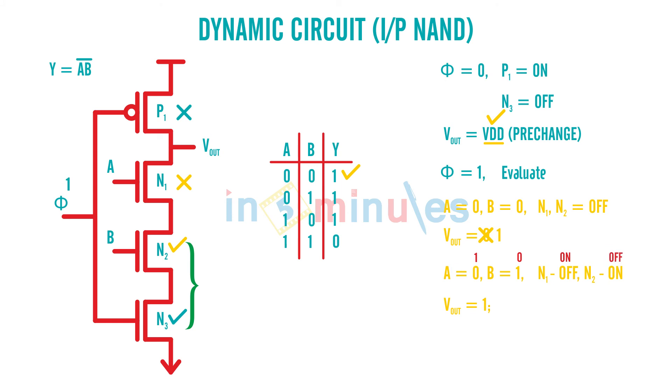N2 is off, still there is no path to ground because N2 now is the culprit and not giving a complete series path to ground so V out cannot be discharged and will be to logic high which is the second and the third case in the truth table.